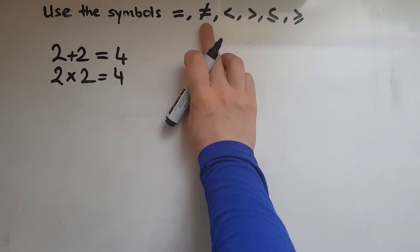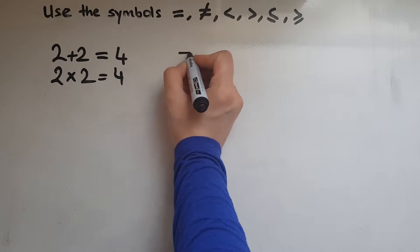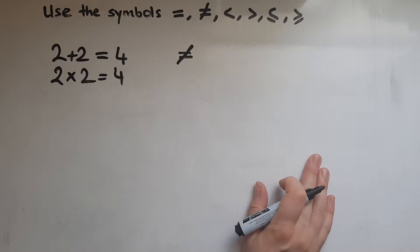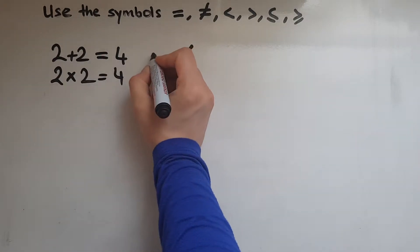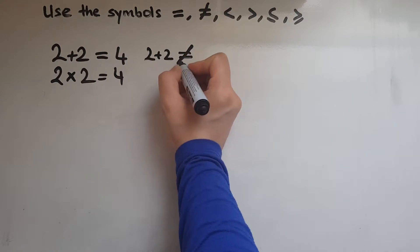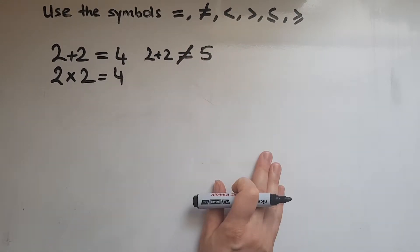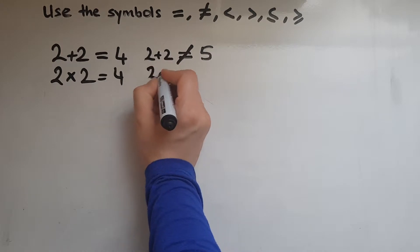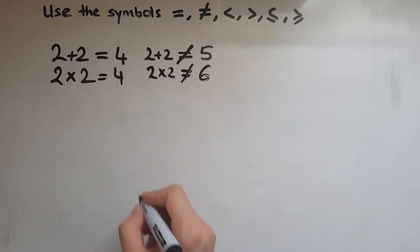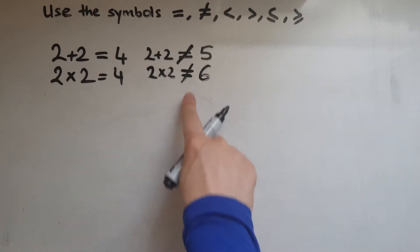This one is very similar to the equal sign but it's got a line going through. What that means is that it's not equal to. So 2 add 2 is not equal to 5, or 2 times 2 is not equal to 6. This symbol means not equal to.